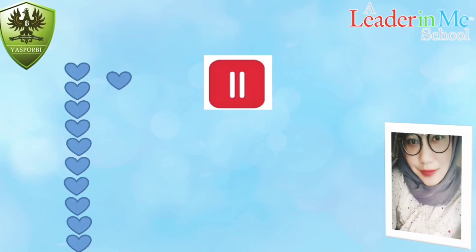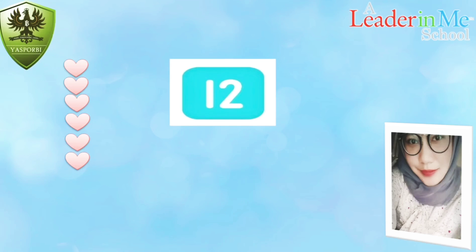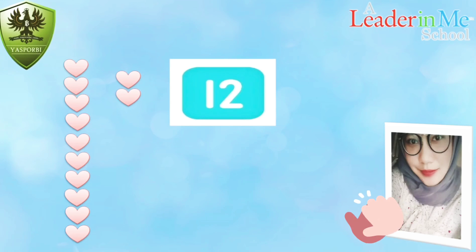Okay friends, after number 11 is number 12. Number 12 consists of number one and two — one and two, we call it 12. Now let's count together: one, two, three, four, five, six, seven, eight, nine, ten, eleven, twelve. We have 12 loves. Remember, 12 consists of number one and two.